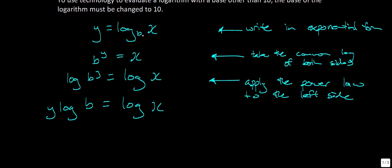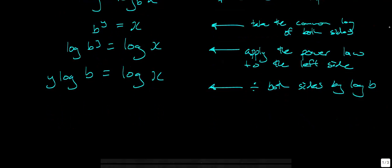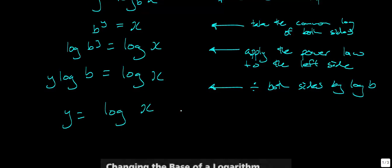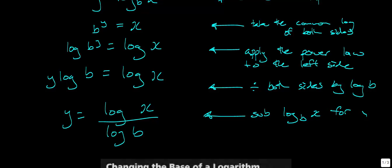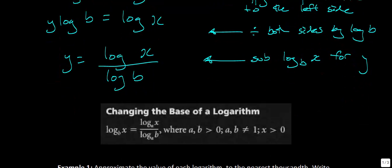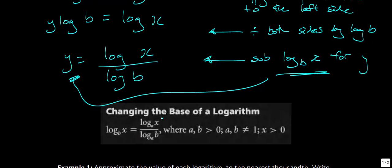Remember, I'm trying to get away from base b and work with base 10 — the common log. To isolate y, I divide both sides by log(b), giving us y = log(x) / log(b). Substituting log_b(x) back in for y, we arrive at the change of base rule: log_b(x) = log(x) / log(b).